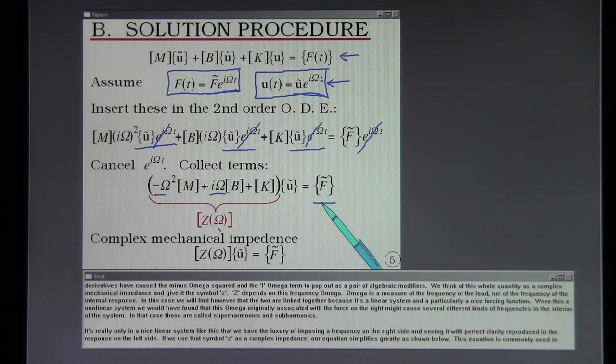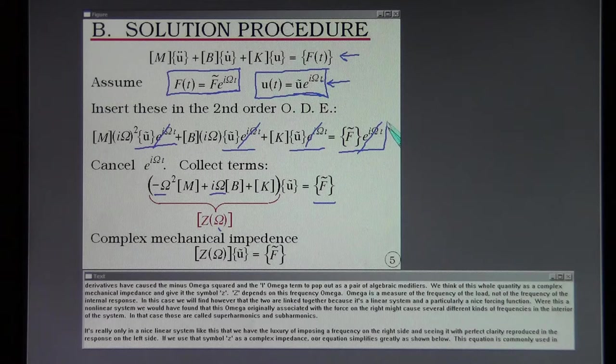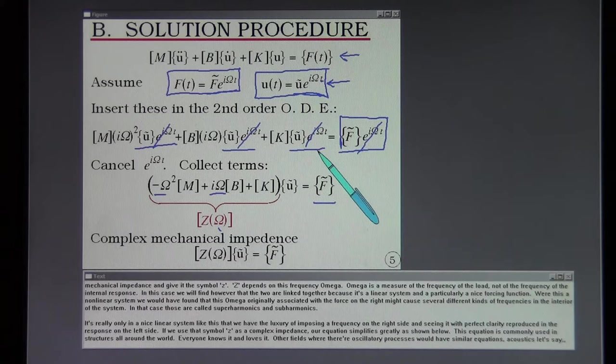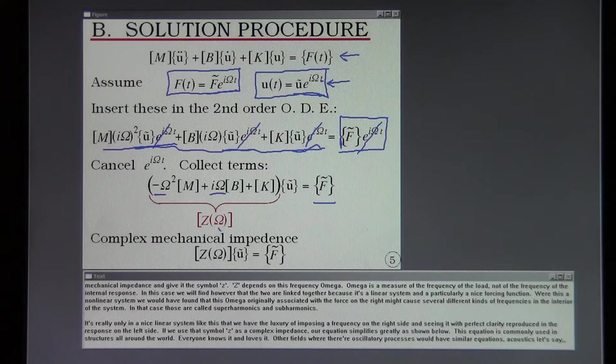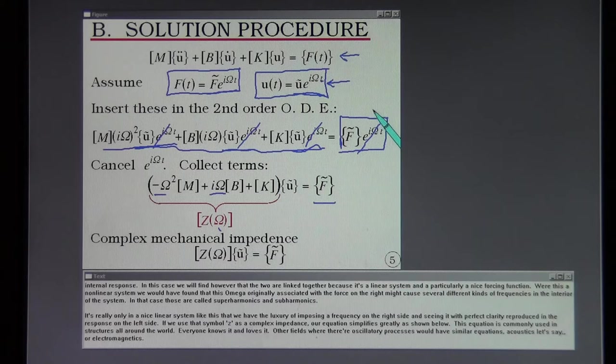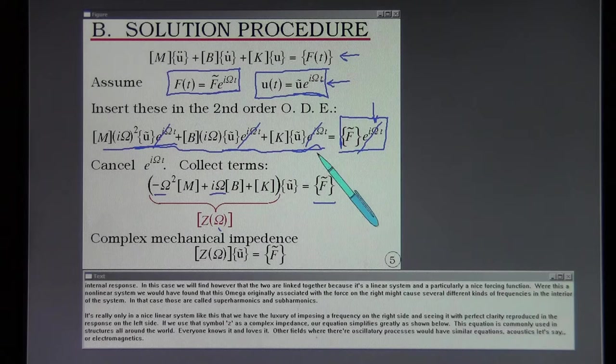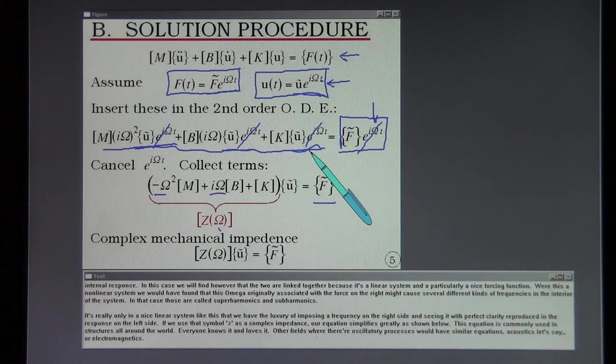Were this a non-linear system we would have found that this capital omega originally associated with the force on the right might cause several different kinds of frequencies in the interior of the system. In that case those are called superharmonics and subharmonics. It's really only in a nice linear system like this that we have the luxury of imposing a frequency on the right side and seeing it with perfect clarity reproduced in the response on the left side.